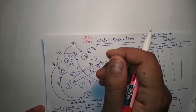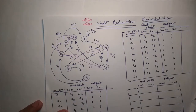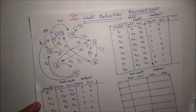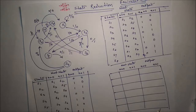First of all, to do this we have to identify the state table. We have to follow a rule to reduce the state. The rule is: two states are said to be equivalent if for each member of the set of inputs they give exactly the same output and set the circuit either to the same state or to an equivalent state. When two states are equivalent, one of them can be removed without altering the input-output relationships. From the state table we look for two present states that go to the same next state and have the same output for both inputs.